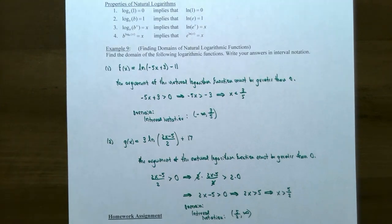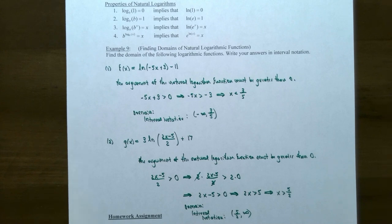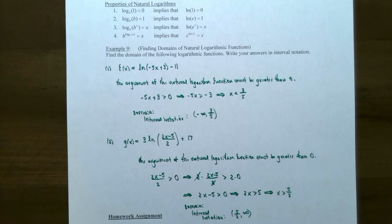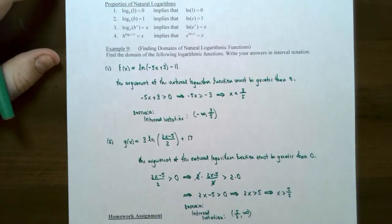This finishes our discussion on logarithmic functions, including the domain of a log function, the graph of a log function, and these two special types of logarithms: base 10 is called the common logarithm, and base e is the natural logarithm. If you have any questions about any of the examples we covered, or any homework problems, please let me know. I'll see you in the next video when we discuss more properties of logarithms.